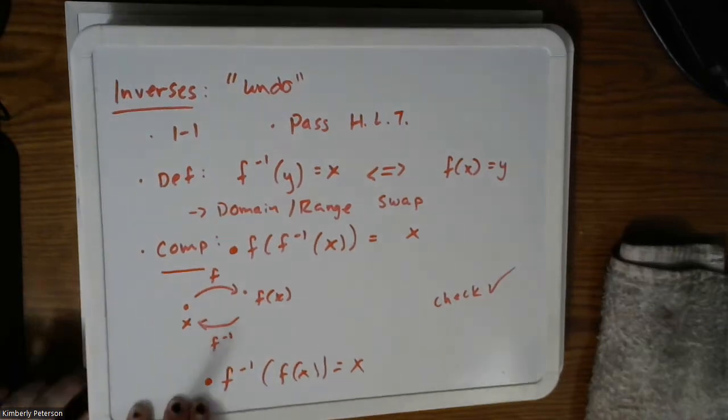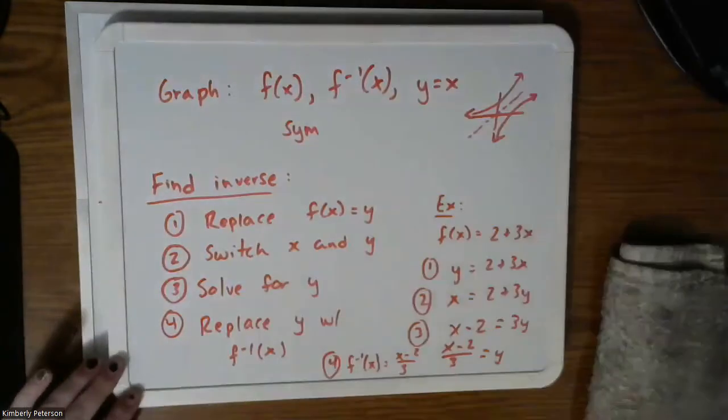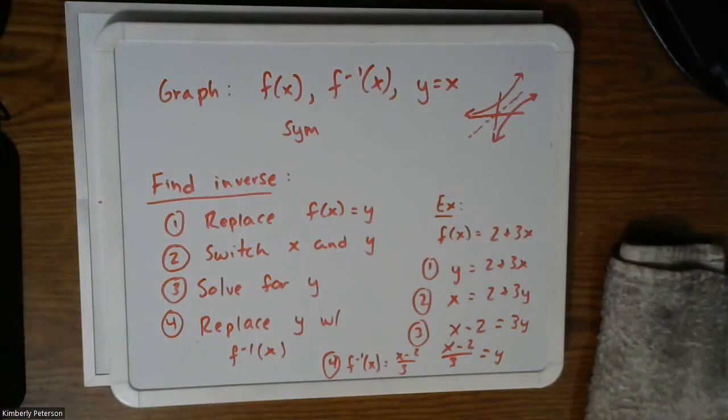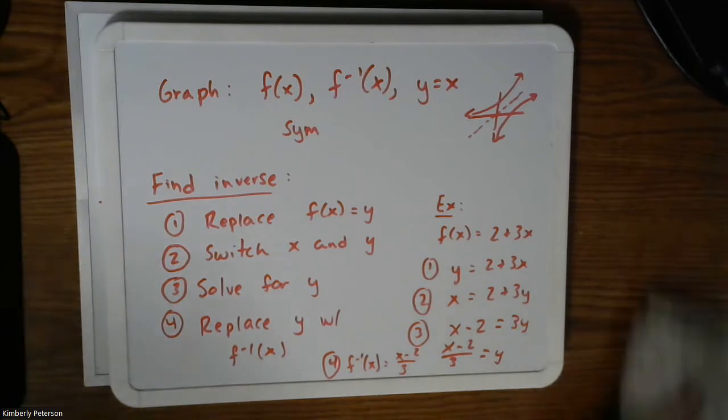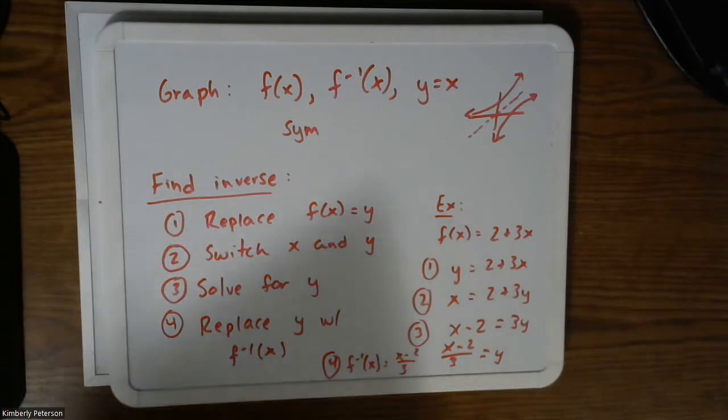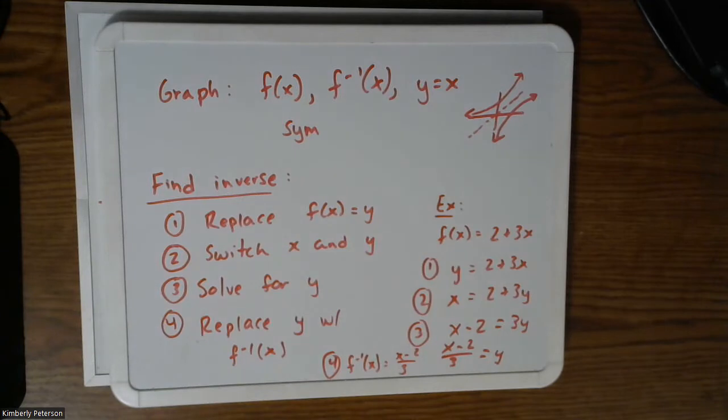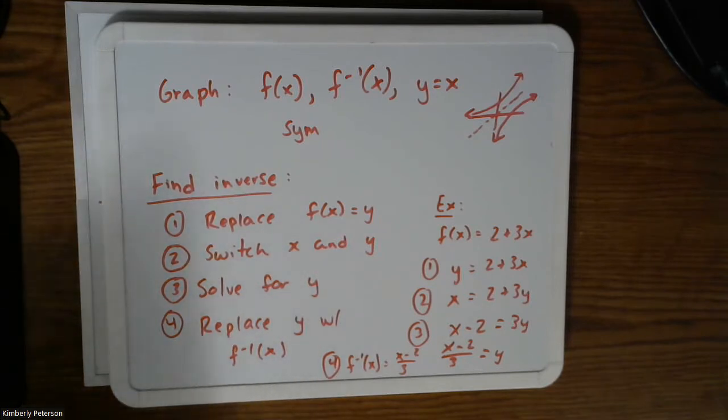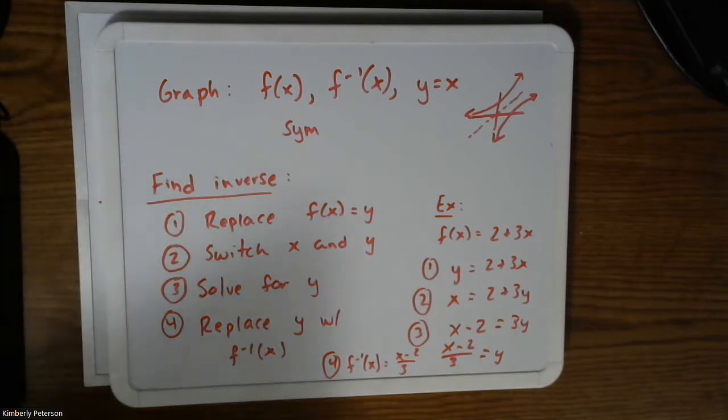So are there any questions with section 3.7 on inverses? Okay, so let's go ahead and move on to chapter four. So chapter four was mostly review in week one and week two. We went into detail about linear functions. So in chapter four, we're just expanding our knowledge of those linear functions. So I'm going to summarize chapter four in one big lecture here. So for chapter four, we did linear.